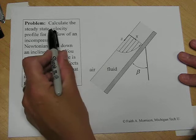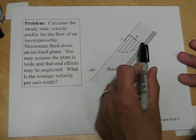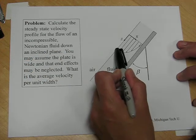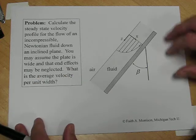Because this problem asks for the velocity profile itself, for the distribution of the velocity in space, we need to use the microscopic balance.